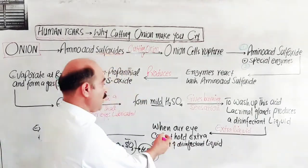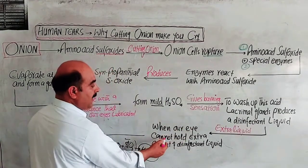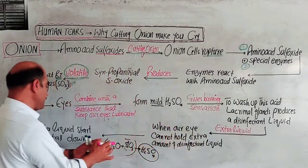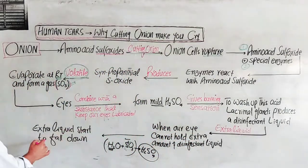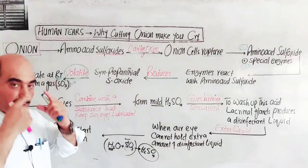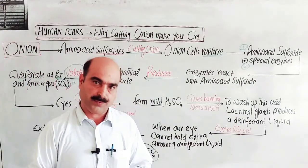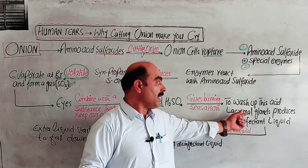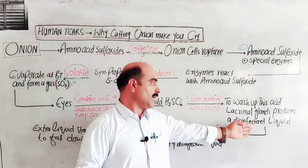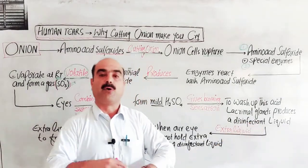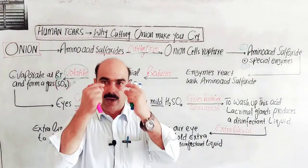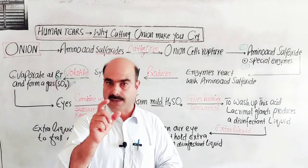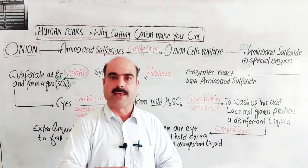In the form of tears, when our eye cannot hold the extra amount of disinfectant liquid, the extra liquid starts to fall down. These are human tears. The lacrimal glands produce this disinfectant liquid. When it is extra, it falls down and these are human tears.